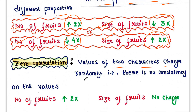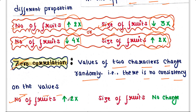Zero correlation: when the values of two characters change randomly, that is there is no consistency in the values, then the relationship is called zero correlation. In our case, number of fruits is increased two times but there is no change in the size of fruits.